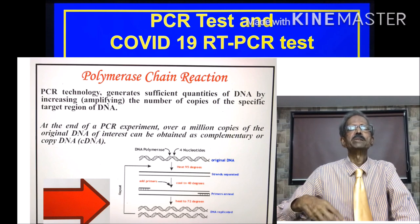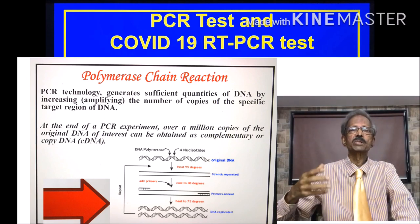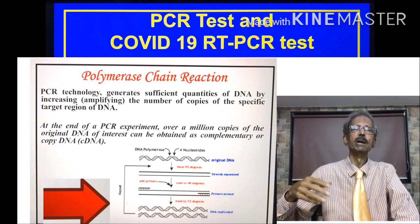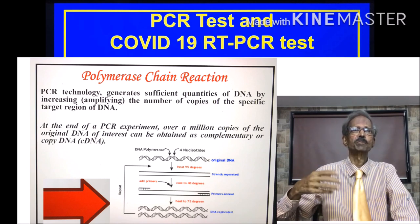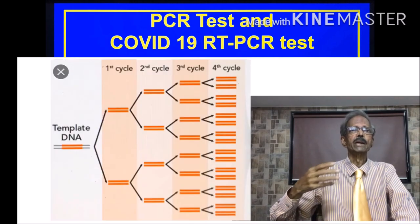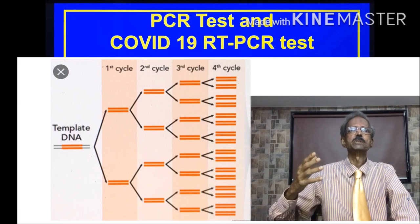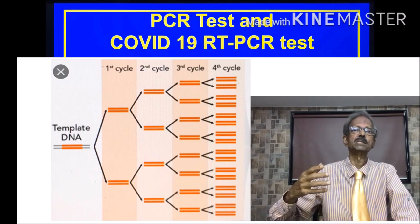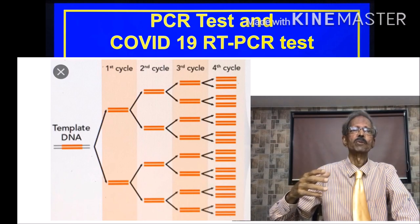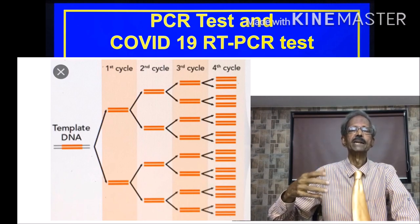By means of PCR technology, it is possible to generate sufficient quantities of DNA by increasing the number of copies of a specific target region of DNA. And at the end of a PCR experiment, over a million copies of the original DNA of interest can be obtained in the form of copy DNA, which is called cDNA.